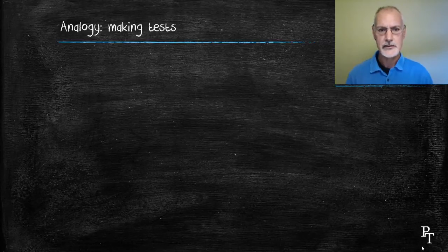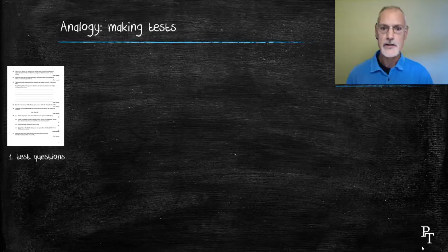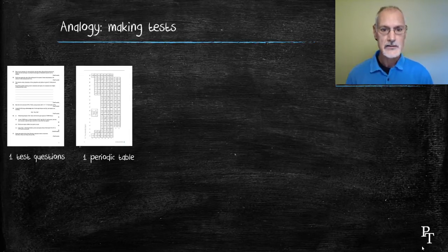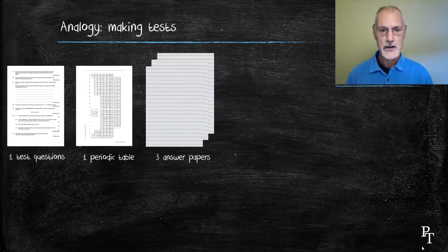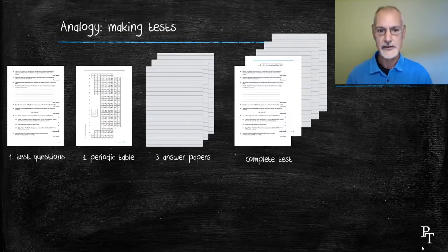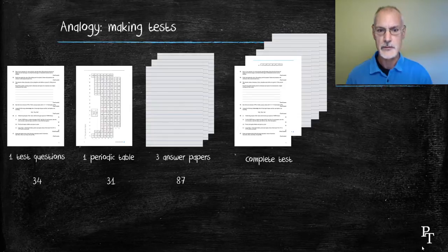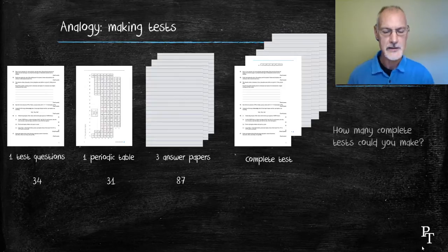Consider you're making a test and you have one test paper. The teacher would also require that you have access to one periodic table and three sheets of foolscap. Those are all stapled together and placed on your desk to form one complete test. My question is, if we're given these numbers of the various items - 34 test questions, 31 periodic tables, and 87 sheets of foolscap - how many complete tests could I make?